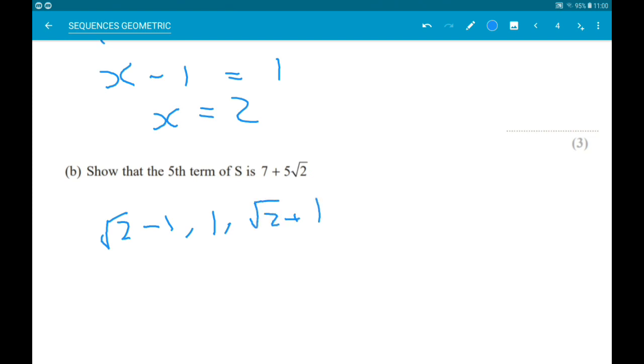Now, the thing that we are multiplying by, which is called the common ratio, is root 2 add 1.